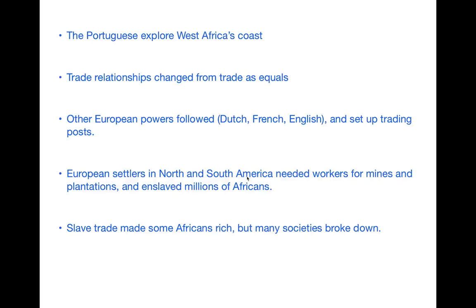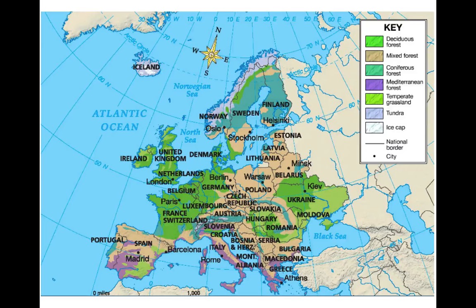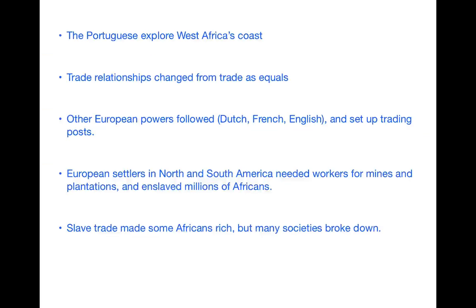The Portuguese start this off. And if you look back at the previous map, Portugal is this country right here next to Spain. They start exploring Africa's west coast because they were looking for gold. So they create these trade relationships, and for the most part they're equals. However, the Portuguese figure out that they can go to the eastern side of Africa and completely control the civilizations and the cities there — and they do that and they overtake them.